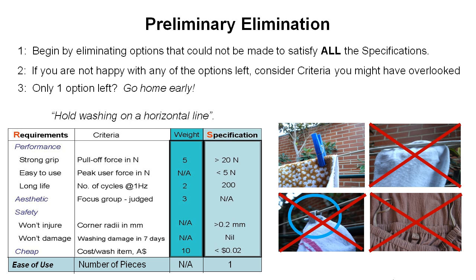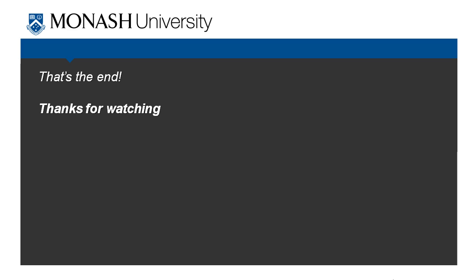That's pretty good — we've only got one option left, which makes our decision-making process trivial. Usually if this is the case, it means you haven't done a very good job of coming up with concepts. Generally we find that we're able to eliminate a couple of our initial ideas based on specifications, but we're hoping to have a few really good viable options left for more detailed analysis and decision-making — and that's something we're going to cover in the next couple of videos. Thanks for watching, see you next time.